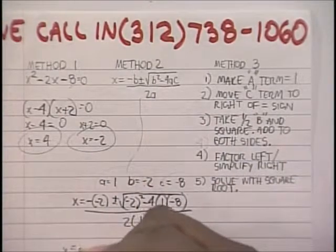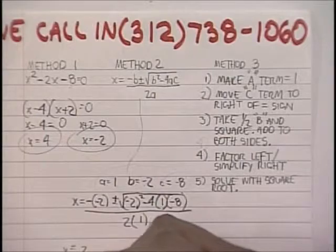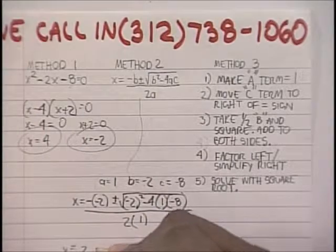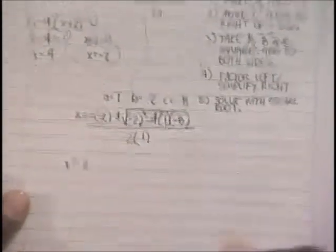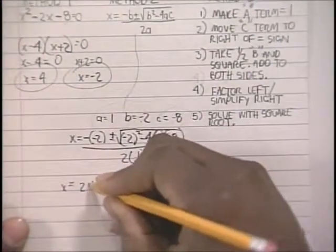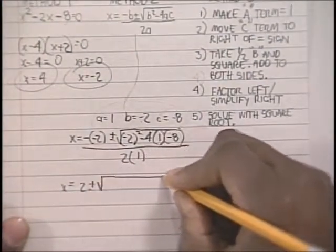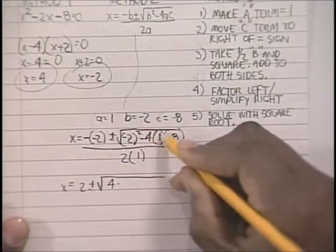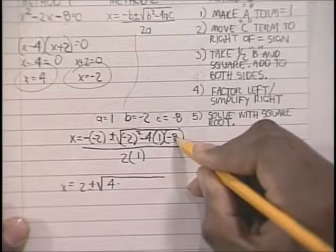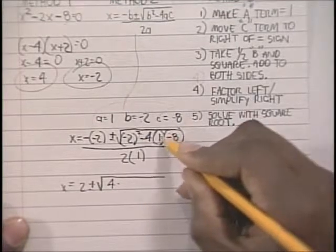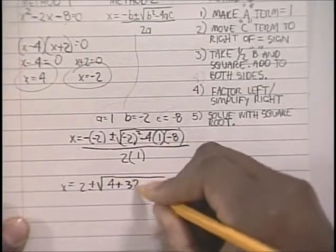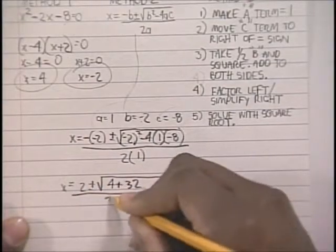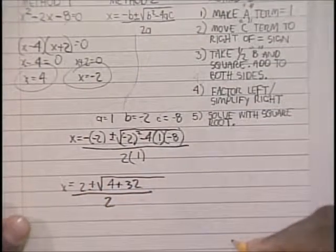Let's simplify it further. You get negative of negative 2, that's 2. Oh, you can't see that, I'm sorry. 2 plus or minus square root of b squared, that's 4, minus 4 times 1 times negative 8. That's negative 4 times 1 times negative 8, which is plus 32, all over 2.